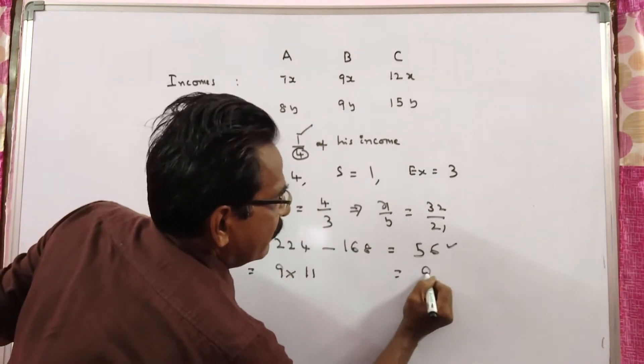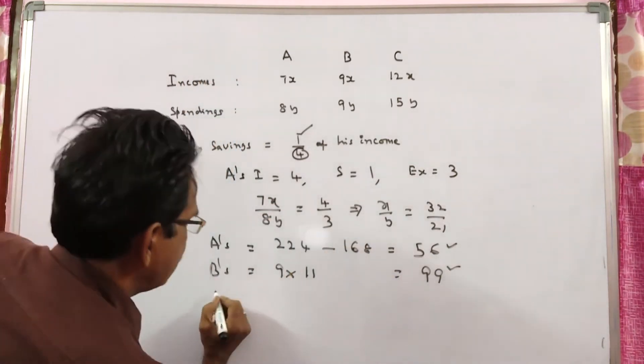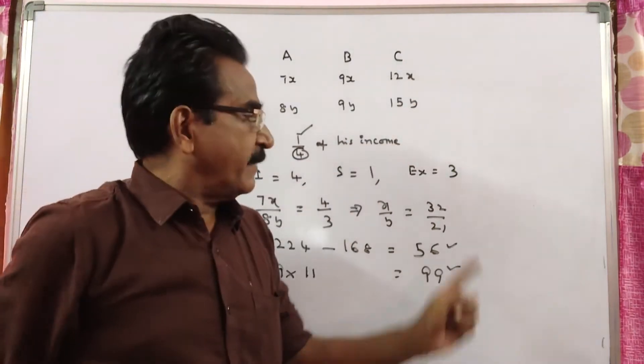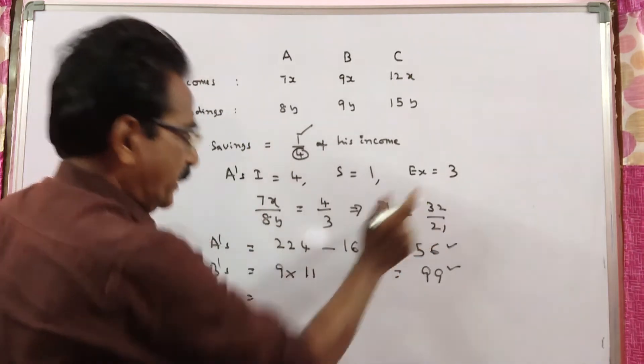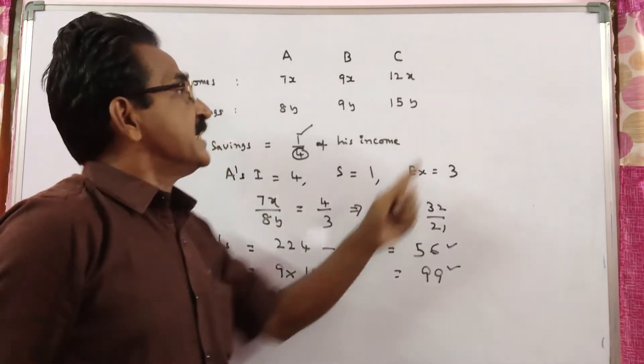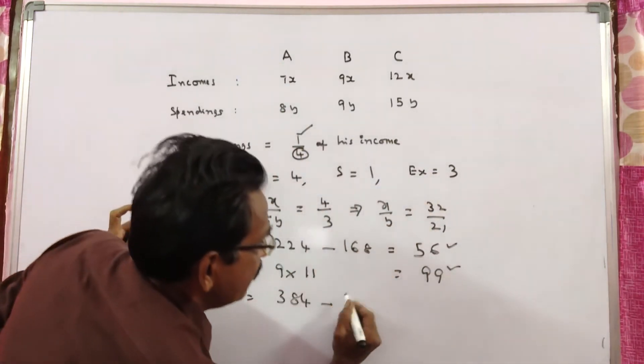Let us see the savings of C. 12x minus 15y, 12 times 32 is 384, minus 15 times 21 is 315.